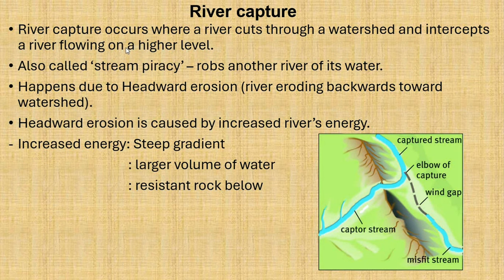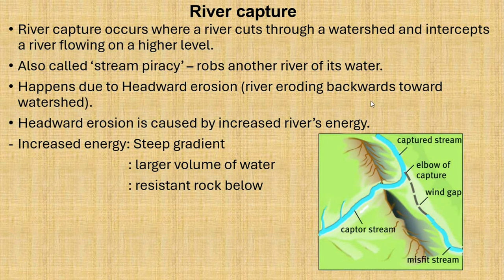River capture refers to a case where a river cuts through a watershed and intercepts a river flowing on a higher level. In other textbooks, they might refer to it as stream piracy, because this is when the river actually robs another river of its waters. This happens mostly on the watershed, on very high ground.